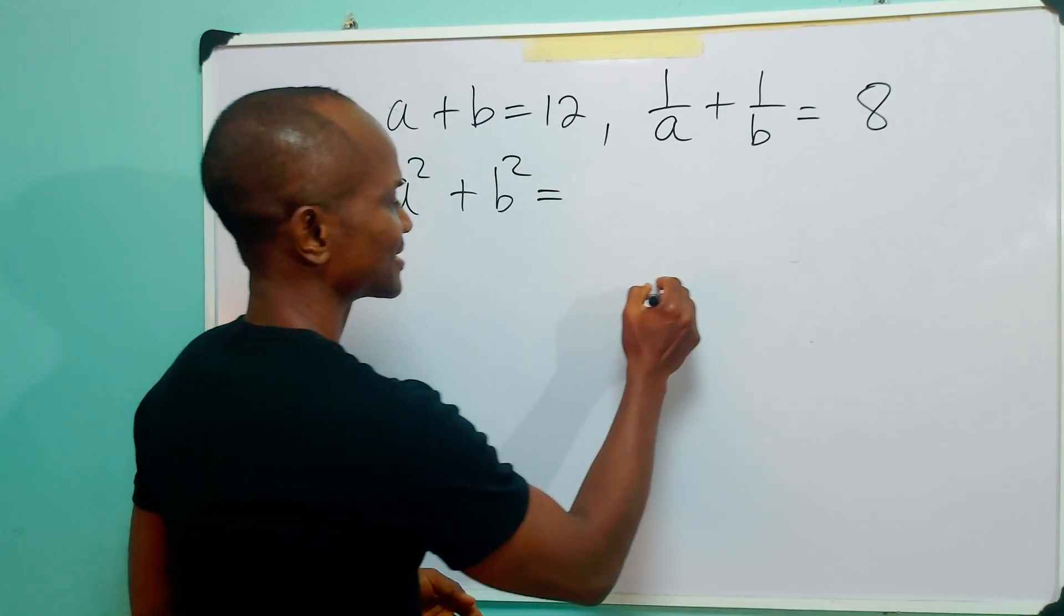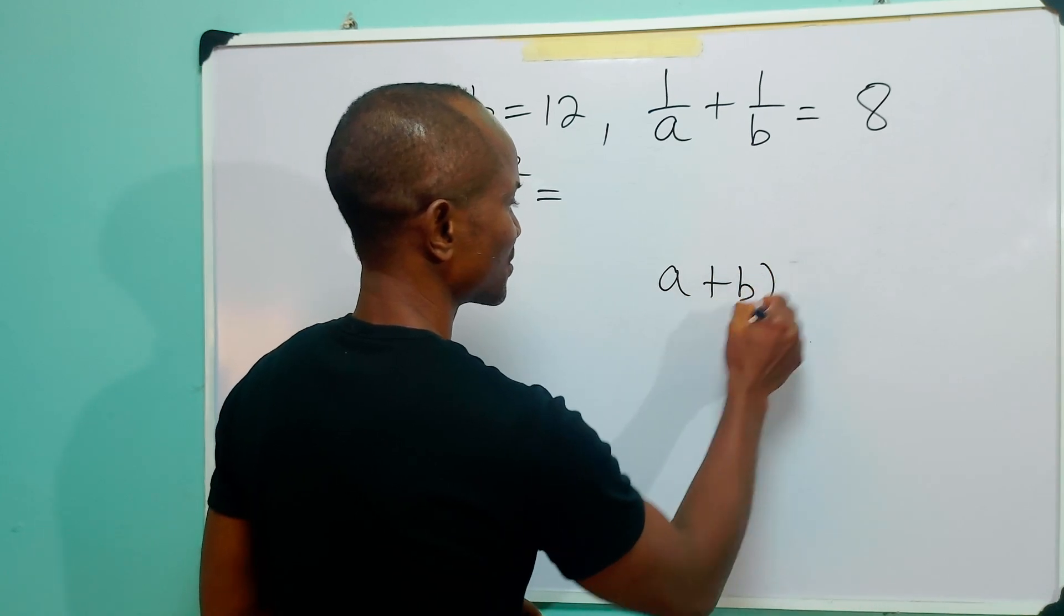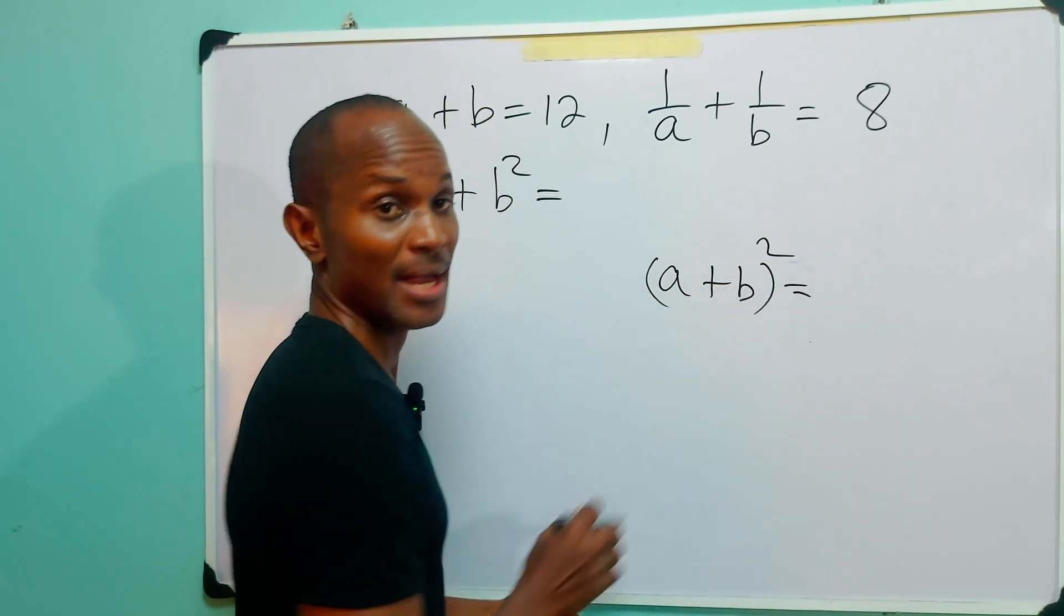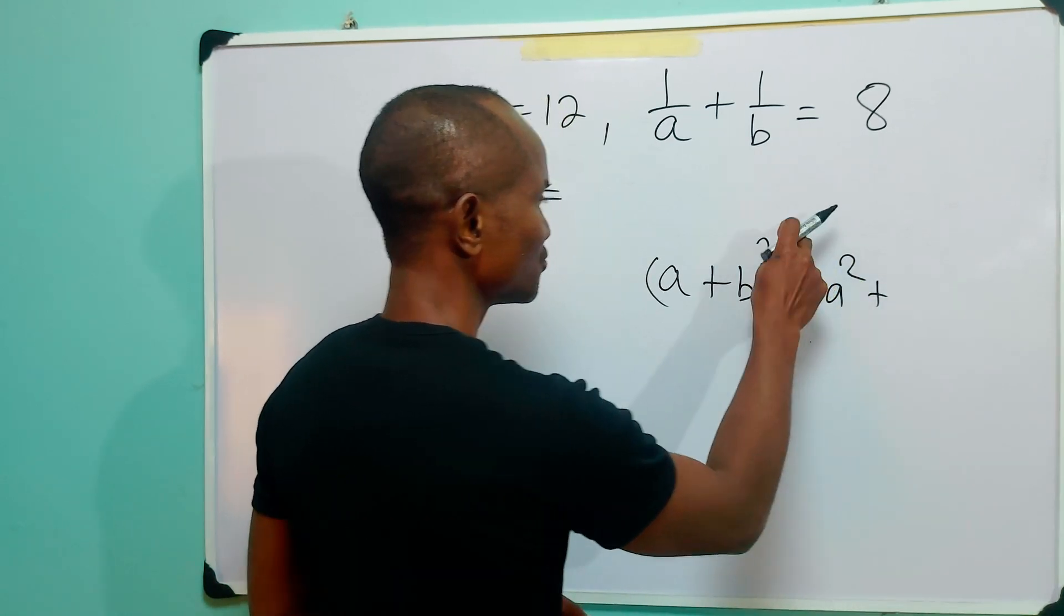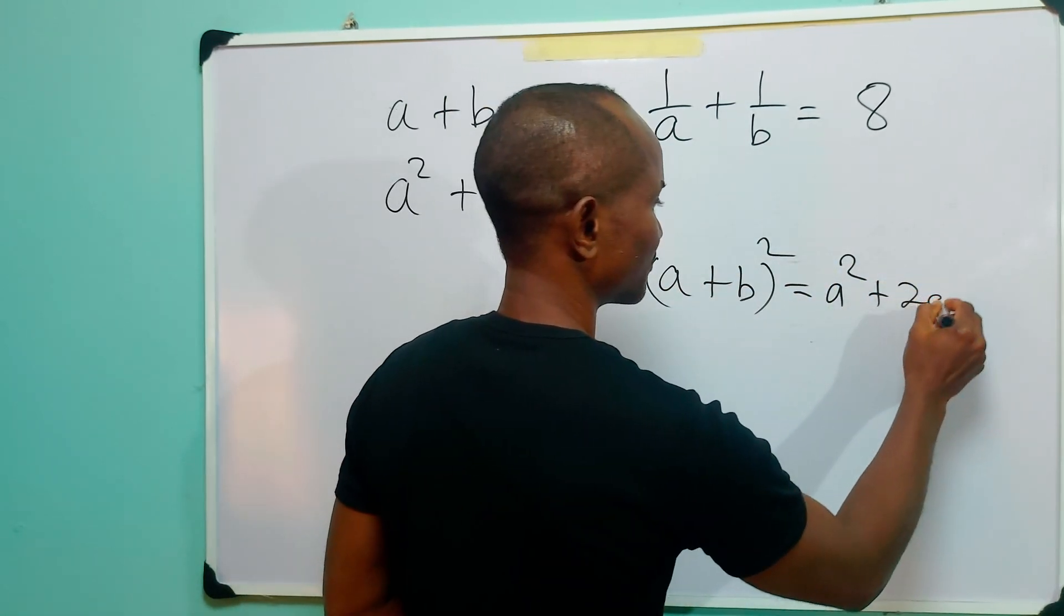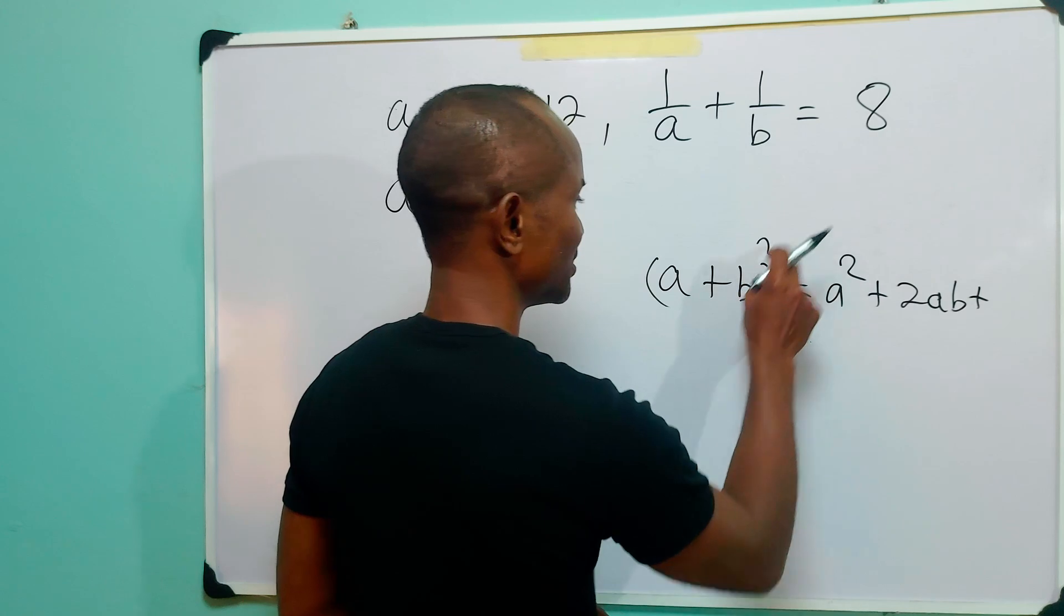Now first let us look at the expansion of A plus B squared. We know that this is equal to A squared plus 2 times A times B plus B squared.